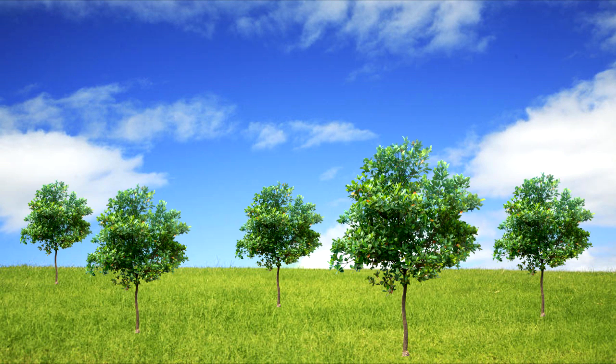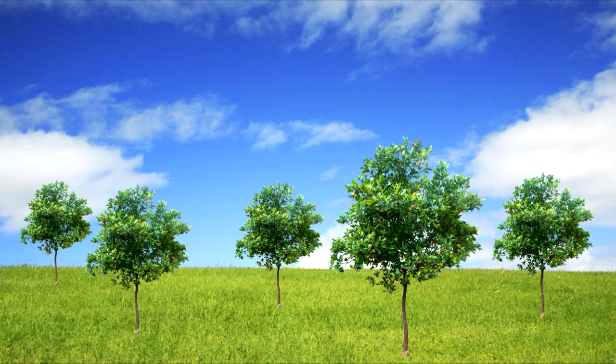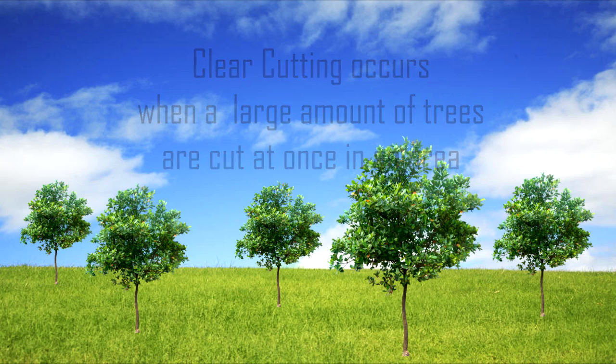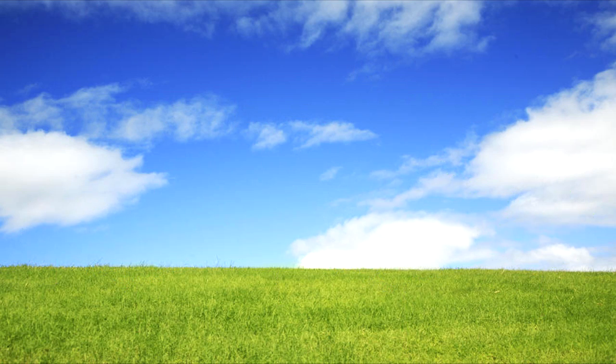As you can see in the background, there are many trees popping up. What clear cutting is, is when all the trees in an area are cut off all at once. As you can see, they slowly disappear.